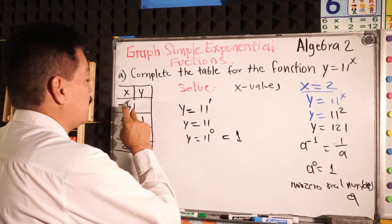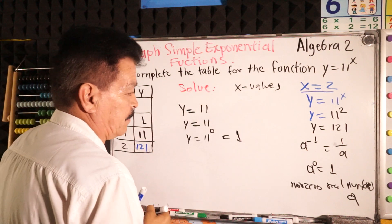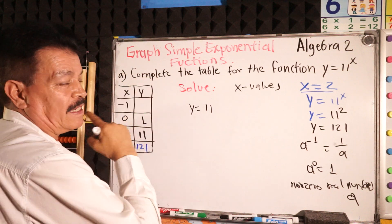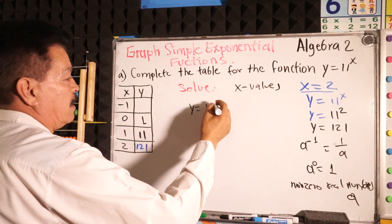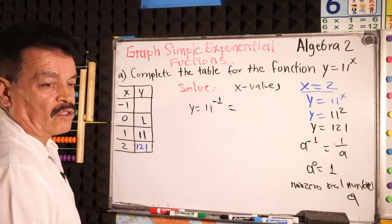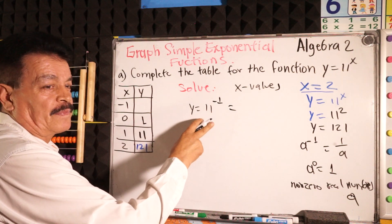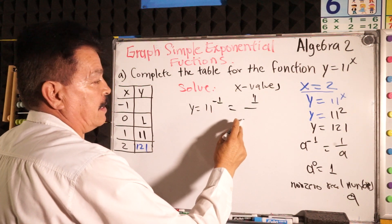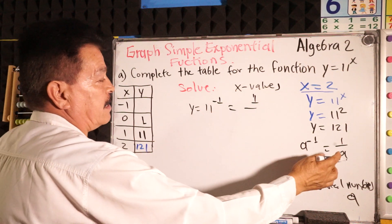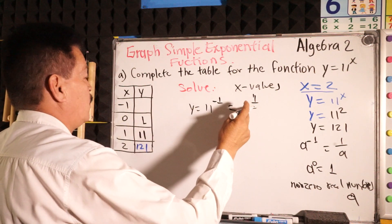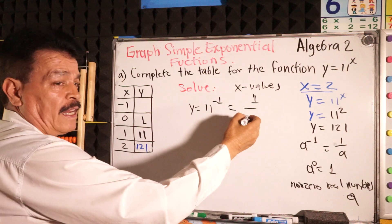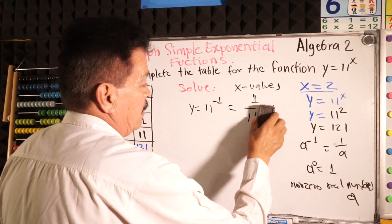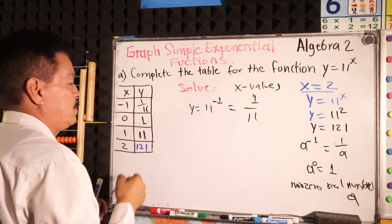For the negative value x equals negative 1, this is a simple exponential function. When you raise a base to a negative exponent, it equals 1 divided by the base. So for 11 to the negative 1, it equals 1 over 11. That's the answer.